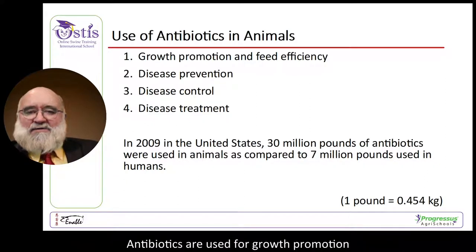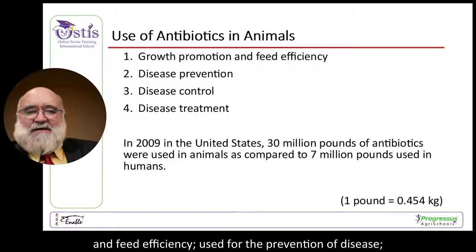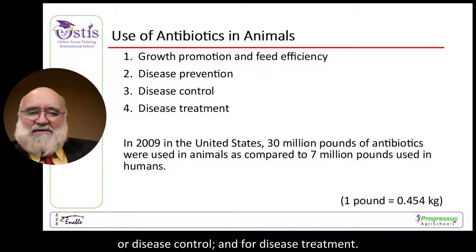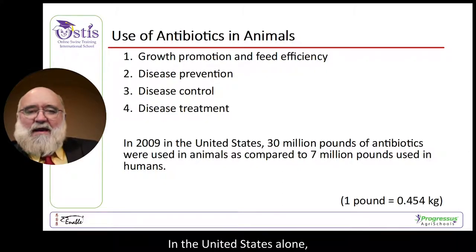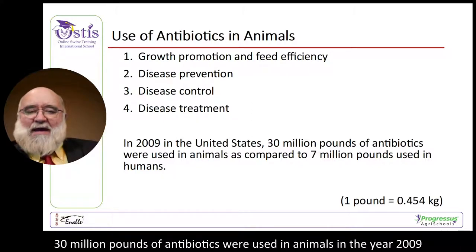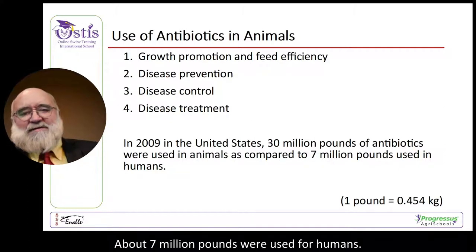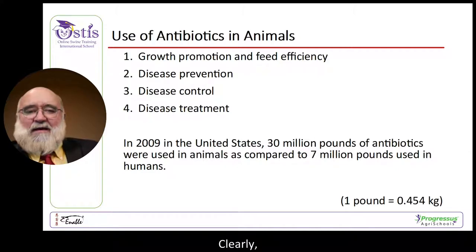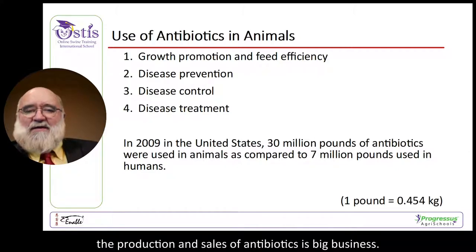Antibiotics are used for growth promotion and feed efficiency, for the prevention of disease, for disease control, and for disease treatment. In the United States alone, 30 million pounds of antibiotics were used in animals in the year 2009, while about 7 million pounds were used for humans. Clearly, the production and sales of antibiotics is big business.